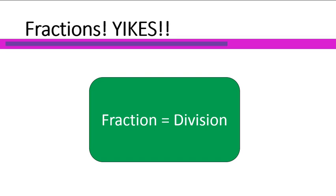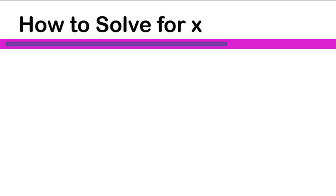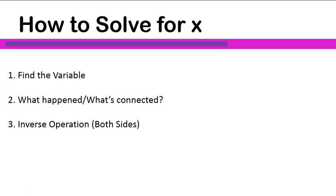So let's go ahead and take a look at the steps for solving some fraction equations for a variable of x. These steps should look very familiar to us at this point. The three steps for solving any one step equations will look like this: you find the variable, you ask what happened or what's connected to it, and then we're going to do the inverse operation to both sides of the equation.